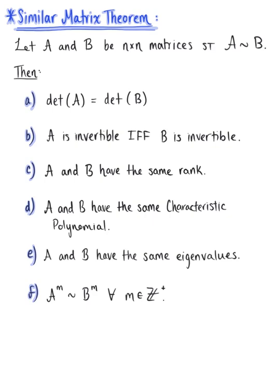And last but not least, property G tells us that if matrix A is invertible, then matrix A to the mth power is similar to matrix B to the mth power for all integers m.